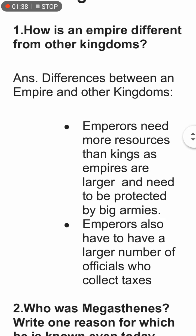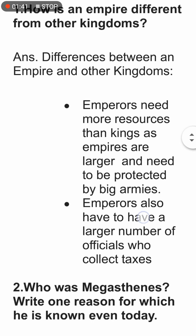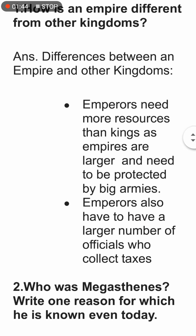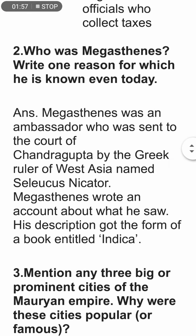How is an empire different from a kingdom? Emperors need more resources than kings, as empires are larger and need to be protected by larger armies. Emperors also need a large number of officials who collect taxes.